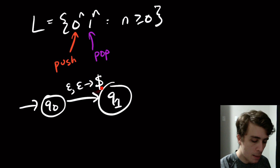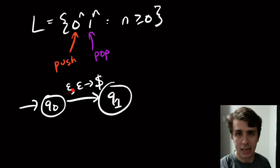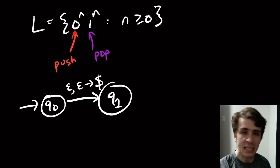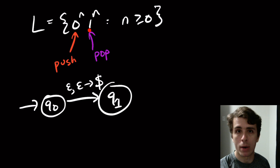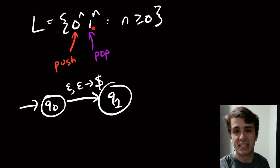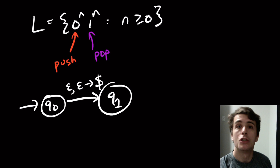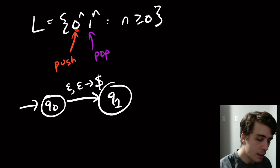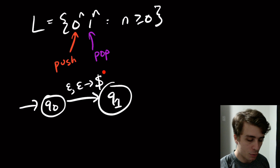I'm not reading anything on this transition. Why? Because whenever I see a zero I want to push onto the stack, and whenever I read a one I want to pop off the stack. Pushing the bottom-of-stack character is neither of those jobs, so we want to not read on this transition. This takes us to state q1.